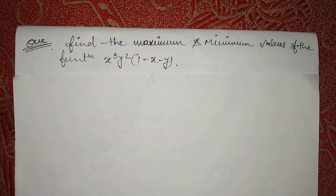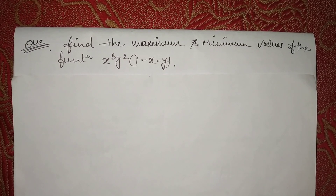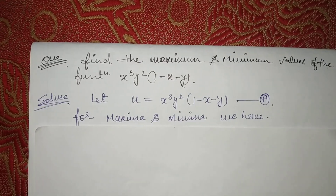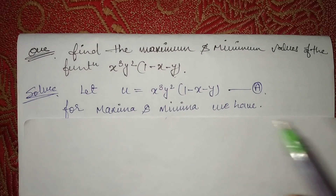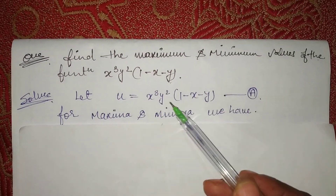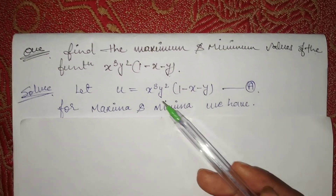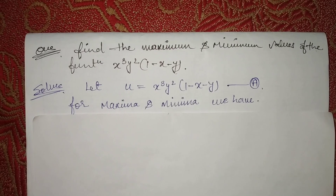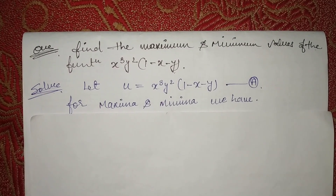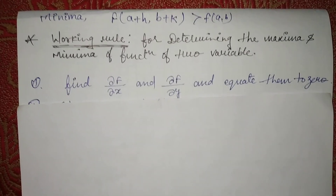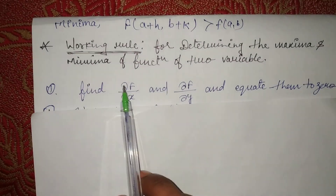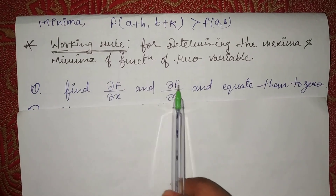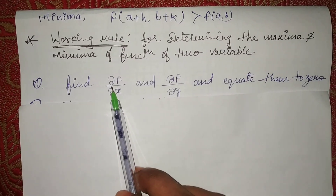This is your question: find the maxima and minima value of the given function. We equate it to u. Our first rule says we have to differentiate with respect to x and with respect to y. So let's proceed — first step: del u upon del x and del u upon del y.